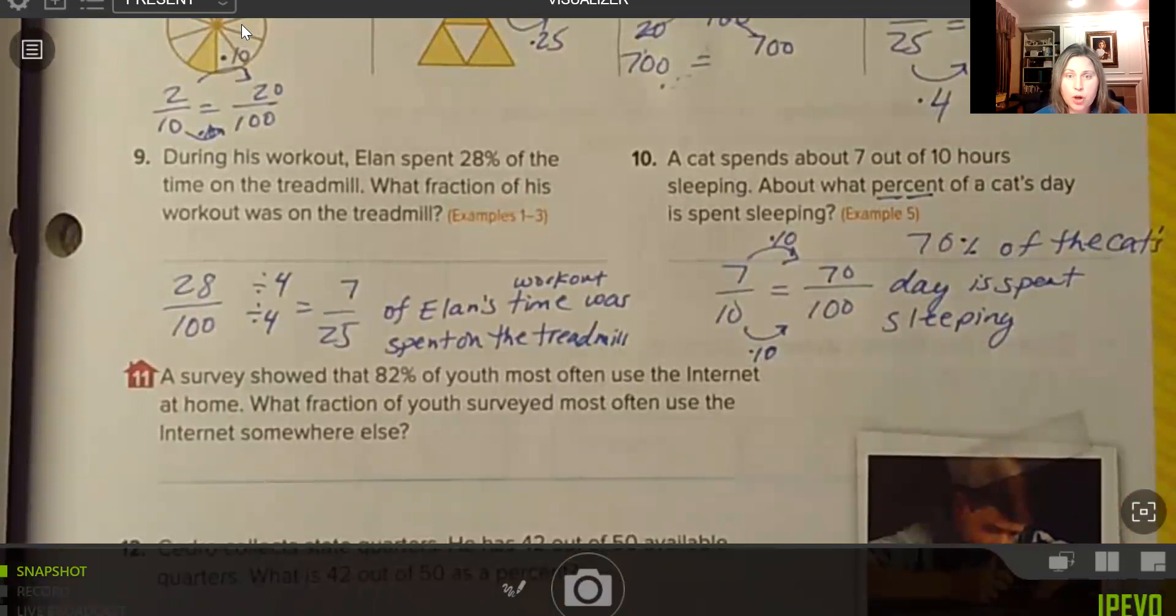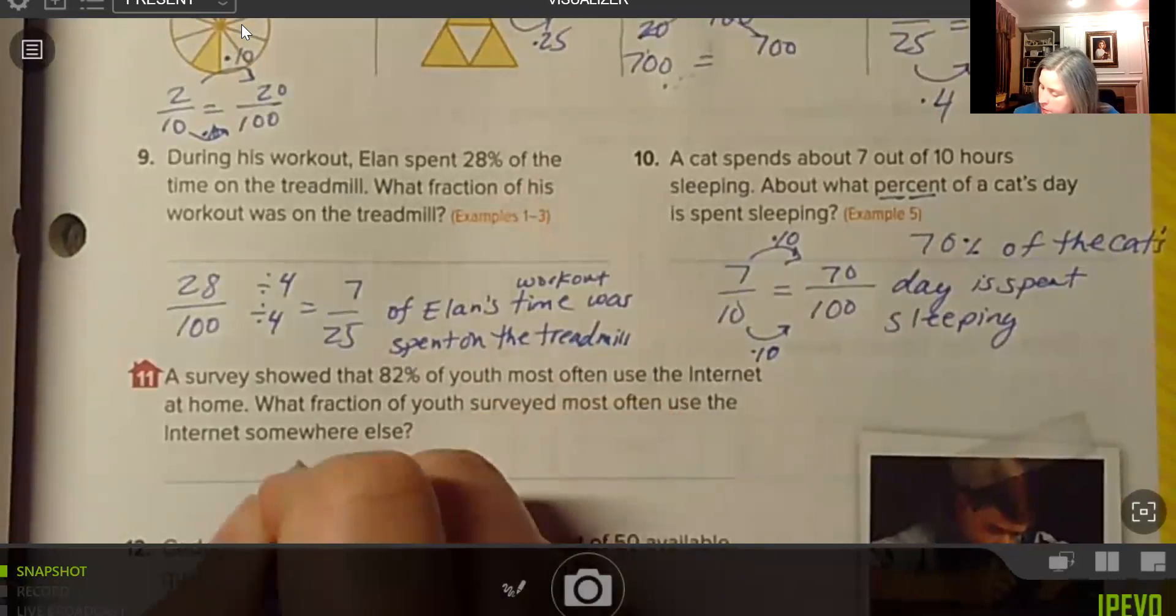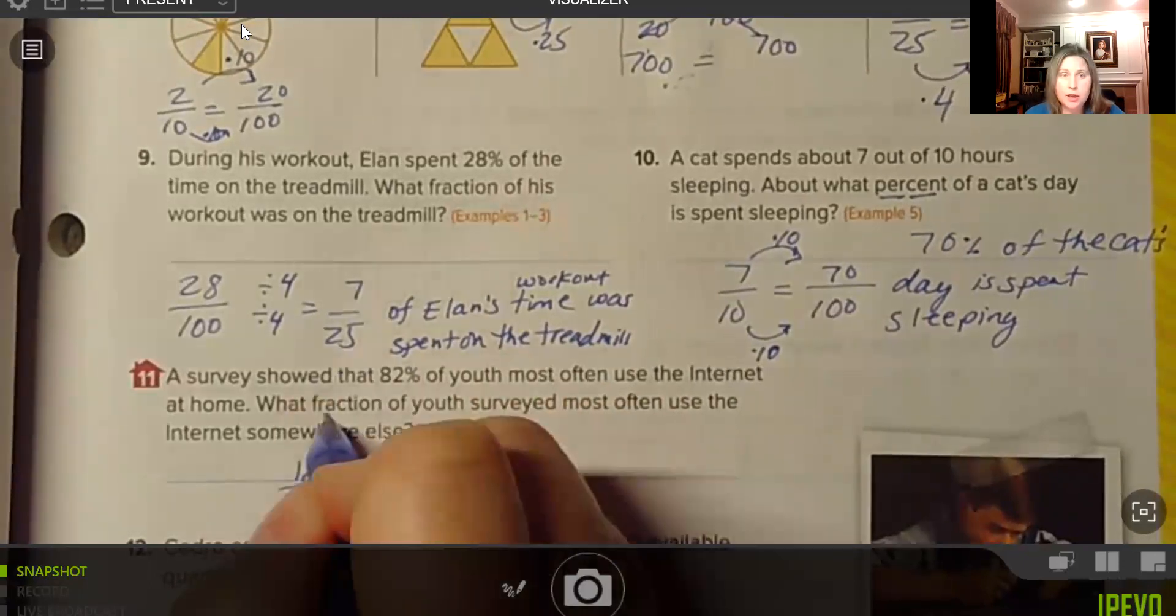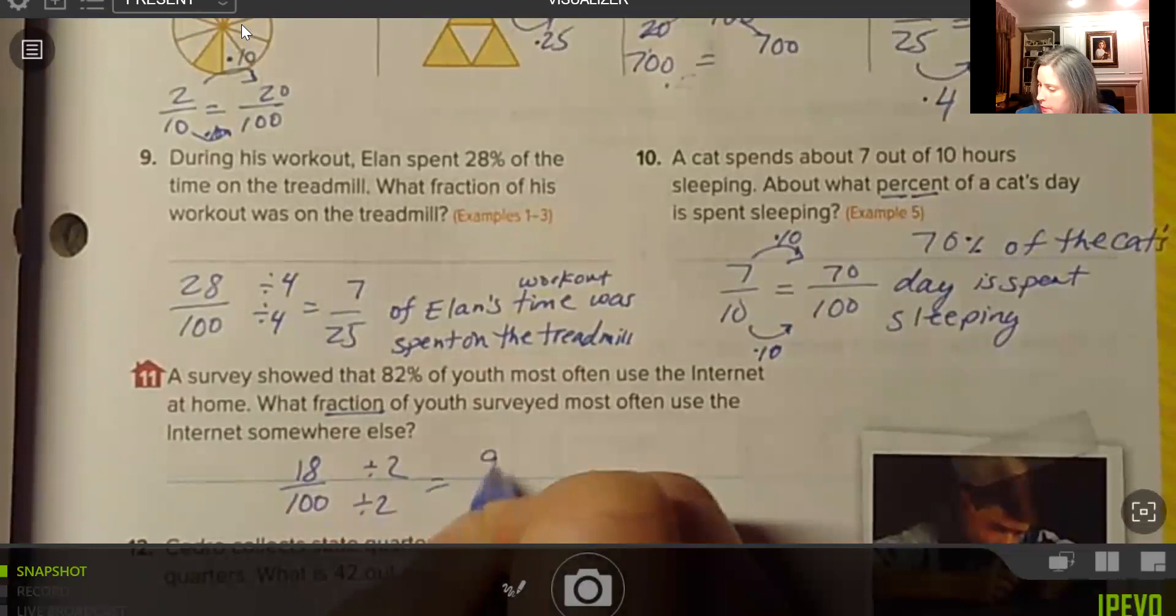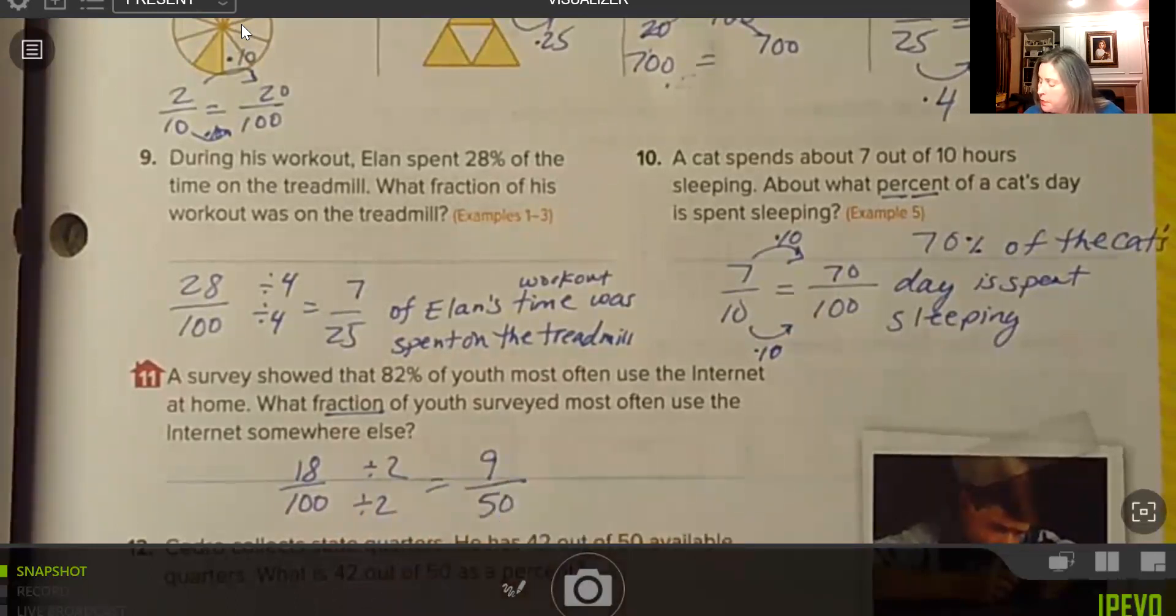A survey showed that 82% of youth most often use the internet at home. What fraction of youth surveyed most often use the internet somewhere else? So if 82% of the youth spent their time on the internet at home, we could do 100 minus 82%, which is 18%. And they asked for that as a fraction. So I wrote that as 18 out of 100. So that means that 18% of the students or youth use the internet somewhere other than their home. And then we want to simplify that by dividing by the GCF. The GCF of 18 and 100 is 2. So I can divide each of these by 2, and I get 9/50. So 9 out of every 50 youths use the internet somewhere other than their home.